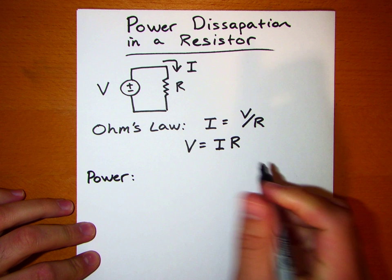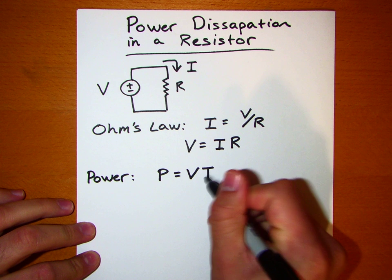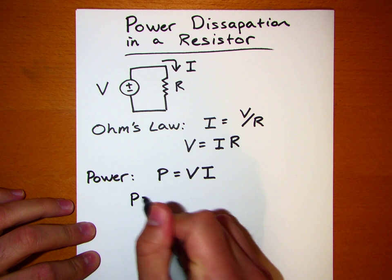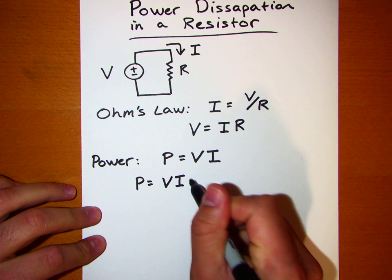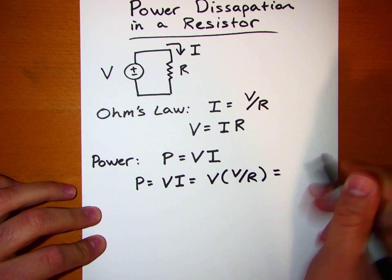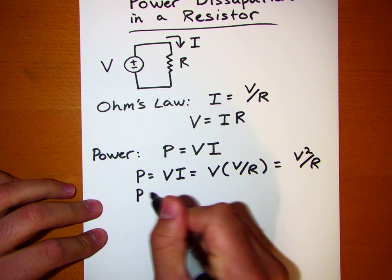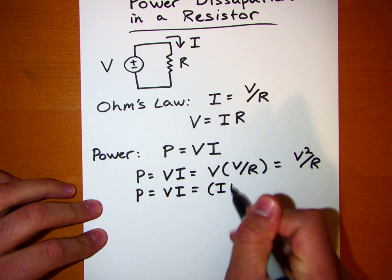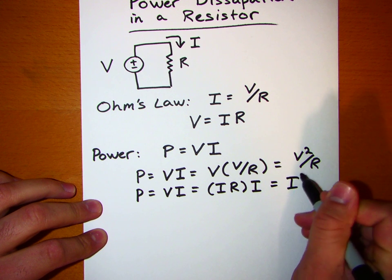There'll be three different forms for the power. The power P is going to be equal to the voltage across the resistor times the current. To get two other forms, we're going to substitute in Ohm's Law. We'll take the first form of Ohm's Law and plug it in for I, so that we get VI equals V times the quantity V over R, which equals V squared over R. Similarly, if we plug the second form of Ohm's Law in for V, we'll get I times R times I, which gives us I squared times R.